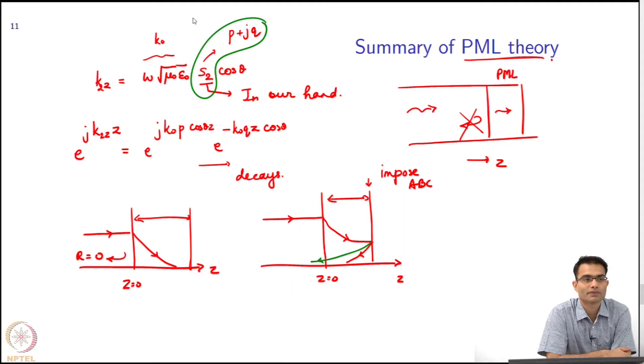Right. So, this is what we have seen so far, our summary of the PML theory. The conclusion was that just by changing the coordinate stretch parameters, I can mimic a lossy medium with zero reflections. That was our concern.